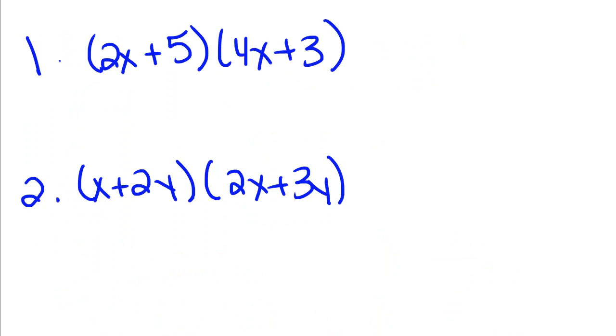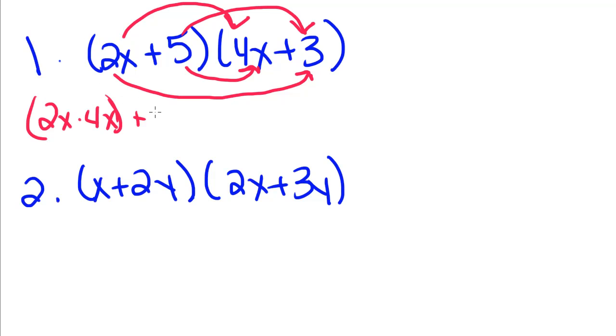So now we're just going to do some examples. So remember we FOIL. We multiply first, outside, inside, last. So the first is 2x times 4x, plus outside, 2x times 3.